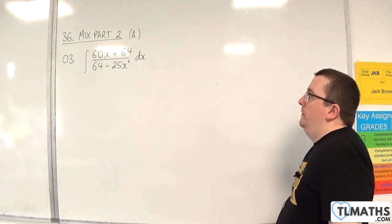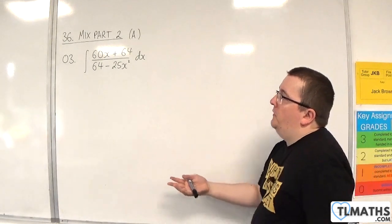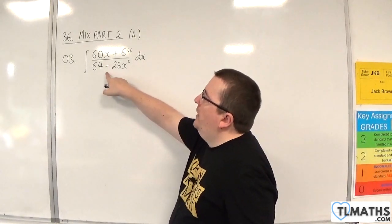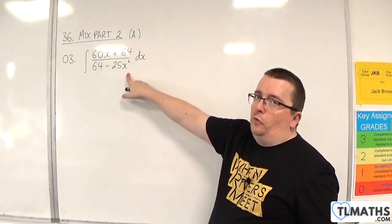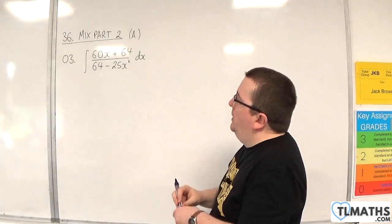So that eliminates that. So what else have we got up our sleeve? Well, you should spot that the denominator is the difference of two squares. We've got 64 and 25. So that means we can factorise the denominator.